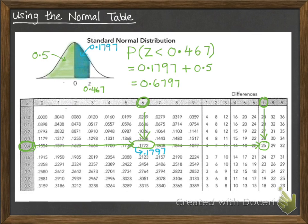So we get our final answer is 0.6797. So the probability that Z is less than 0.467 is 0.6797.